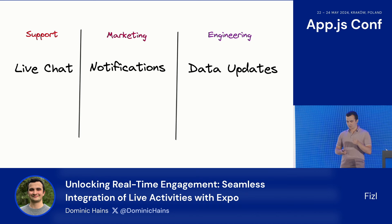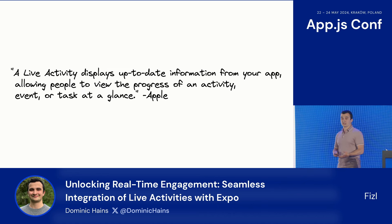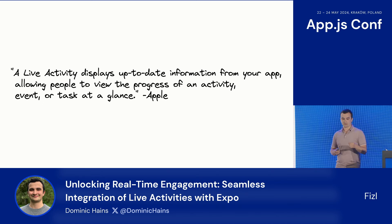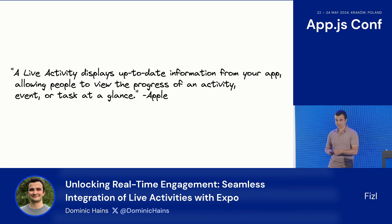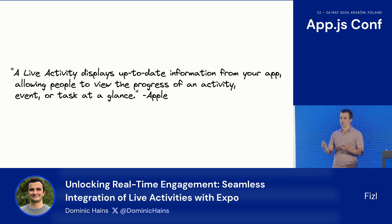A really great way of doing it that's fairly new is through live activities. According to Apple, a live activity displays up-to-date information from your app, allowing people to view the progress of an activity, event, or task at a glance. So if you don't respect this definition to the letter, we all know what's going to happen at review time.